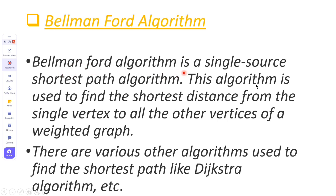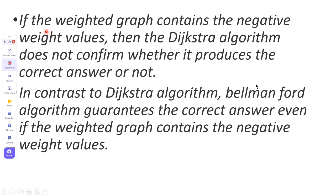Bellman-Ford Algorithm is a single-source shortest path algorithm. This algorithm is used to find the shortest distance from a single vertex to all other vertices of a weighted graph. There are various other algorithms used to find the shortest path, like Dijkstra's Algorithm. If the weighted graph contains negative weighted values, Dijkstra's Algorithm does not confirm whether it produces the correct answer or not. In contrast, Bellman-Ford Algorithm guarantees the correct answer even if the weighted graph contains negative weighted values.